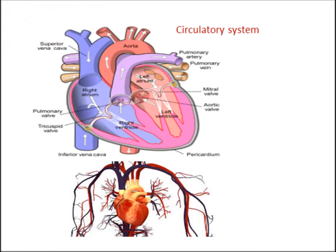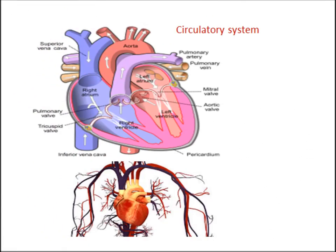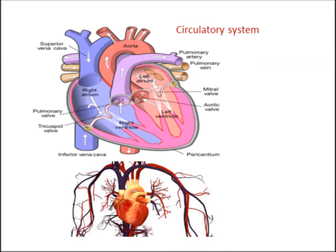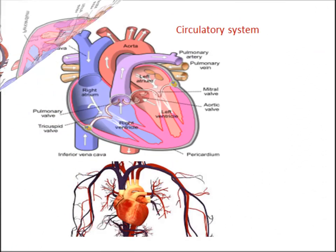The heart is made up of muscles and has four chambers: right and left atrium, and right and left ventricles. The blood vessels that take blood away from the heart are called arteries, and blood vessels that bring blood back from organs to the heart are called veins. Arteries and veins are connected to each other through capillaries.